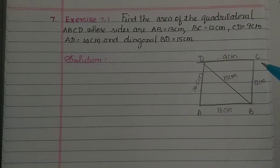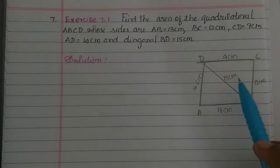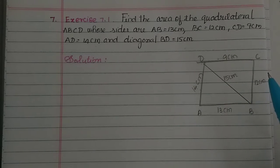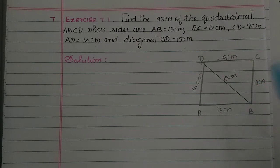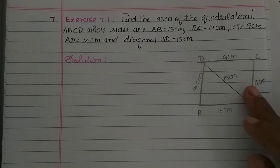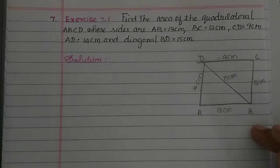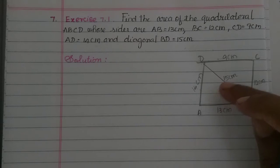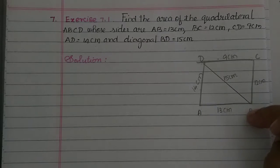The diagonal divides the quadrilateral into two triangles. Now, how do you find the area of the quadrilateral? If you have a parallelogram, rectangle, or square, then opposite sides are equal. But here, the quadrilateral has 4 different sides. So for a quadrilateral where all 4 sides are different, we find the area of each triangle and then add them to get the area of quadrilateral ABCD.